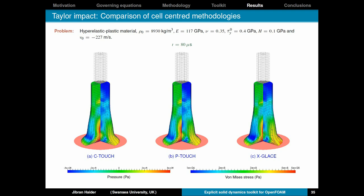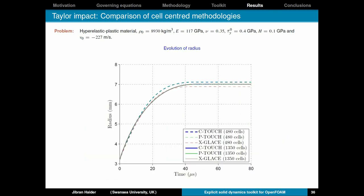Now we have got a comparison of the three cell centered methodologies that we have shown in this presentation. The C-Touch, P-Touch and X-Glace schemes. As you can see the results are very similar for both pressure and von Mises stresses. We also monitor the evolution of the radius of this column. So as you can see with the dashed lines showing coarser meshes. As you refine to the continuous line. They are all on top of each other and converge to a value of 7mm at the final time.